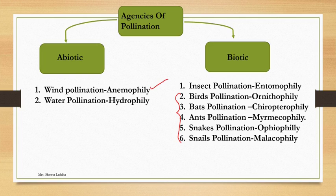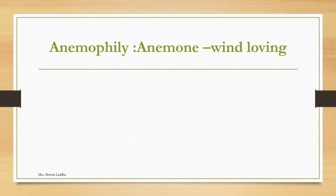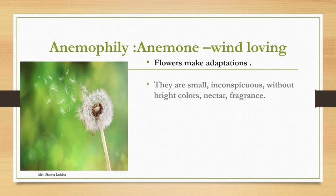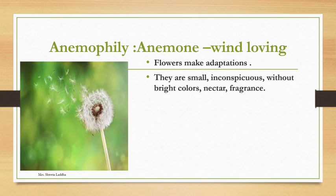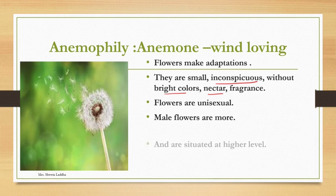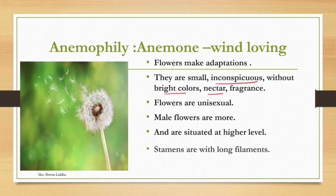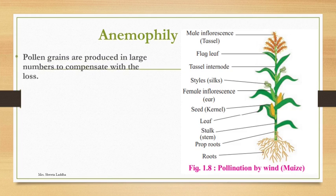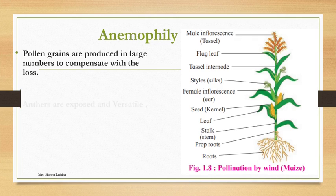In practical, we will take one example of wind pollination and one of insect pollination. Anemophily — the word 'anemone' means wind and 'phily' means loving — so pollination here takes place by wind. Flowers make adaptations: they are very small, inconspicuous, not visible, do not have bright colors, do not have nectar or fragrance. Usually flowers are unisexual and plants may be monoecious. Male (staminate) flowers are more in number and usually situated at a higher level; stamens have long filaments.